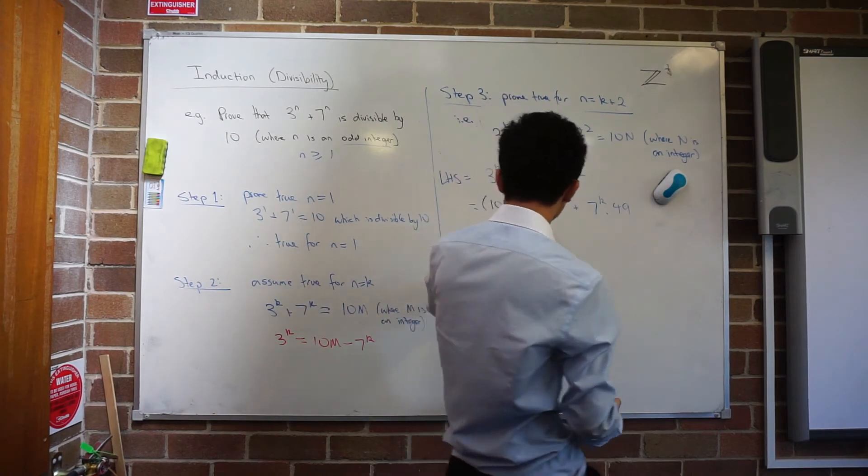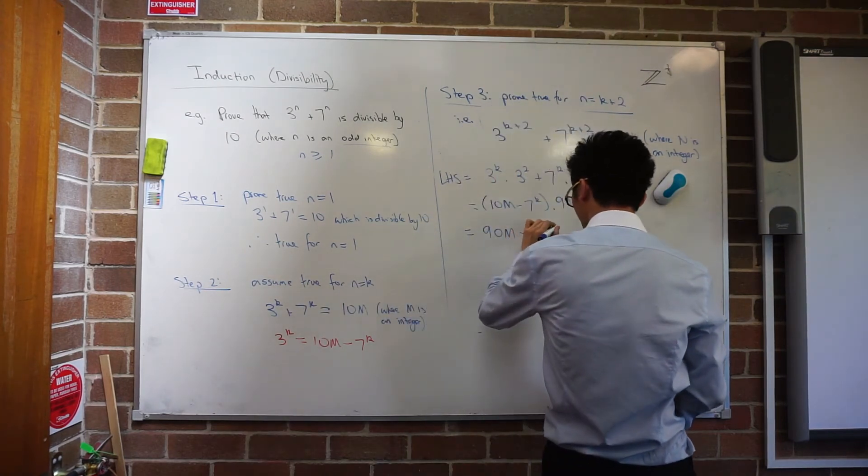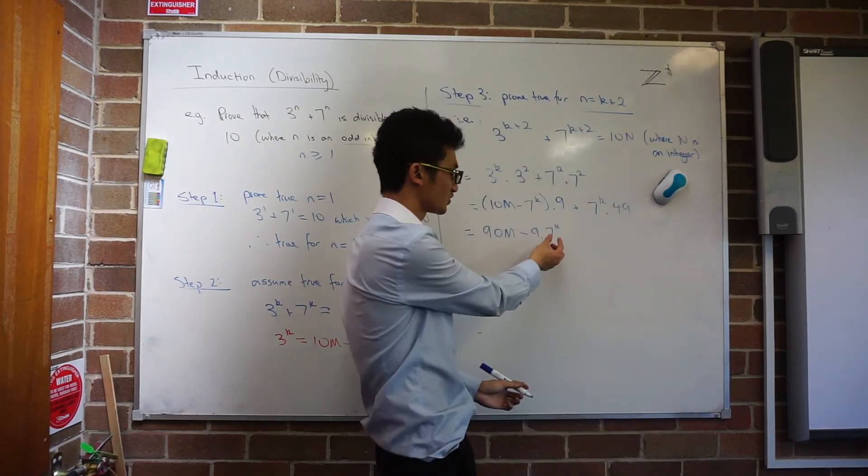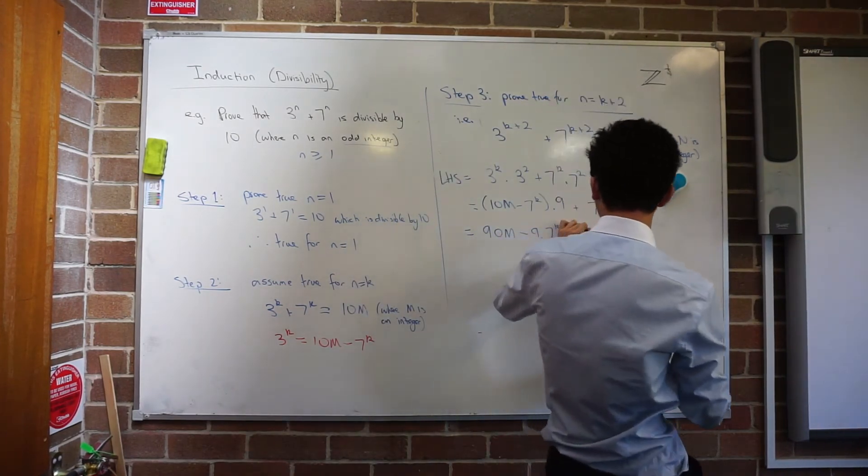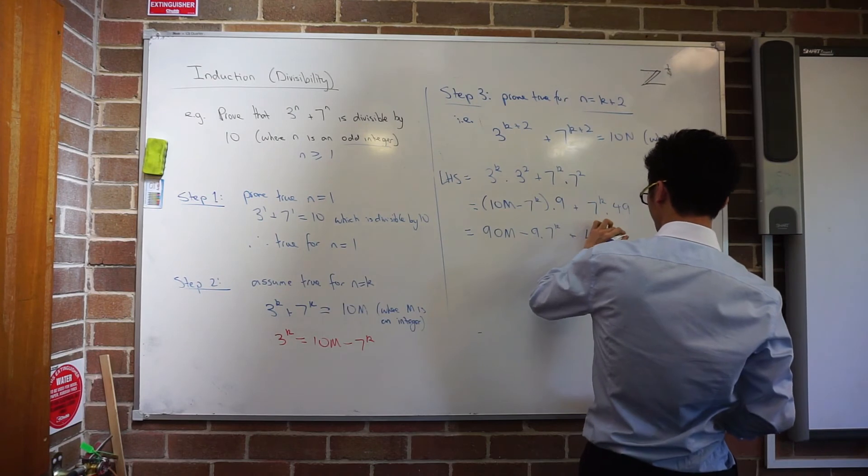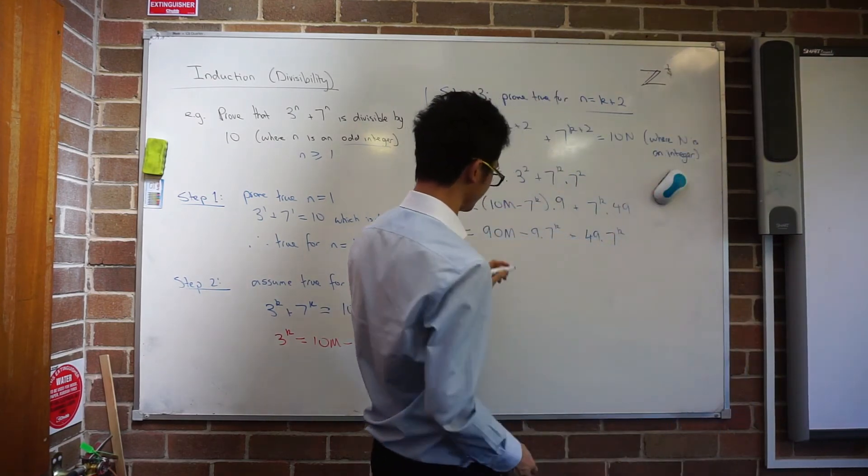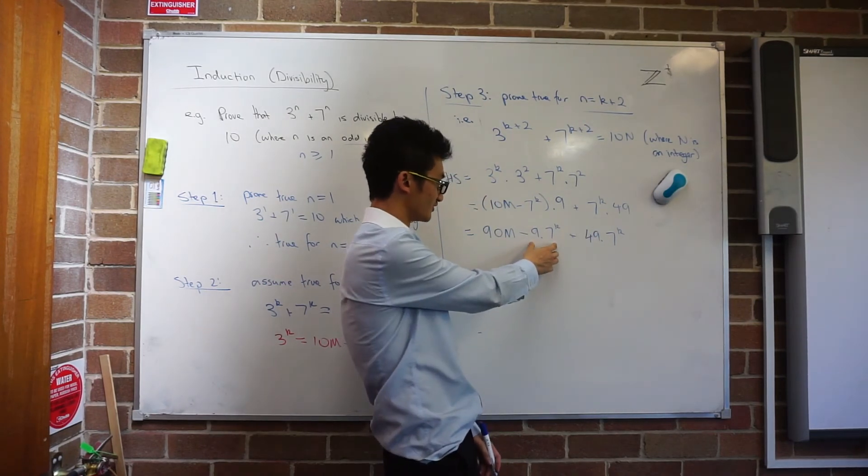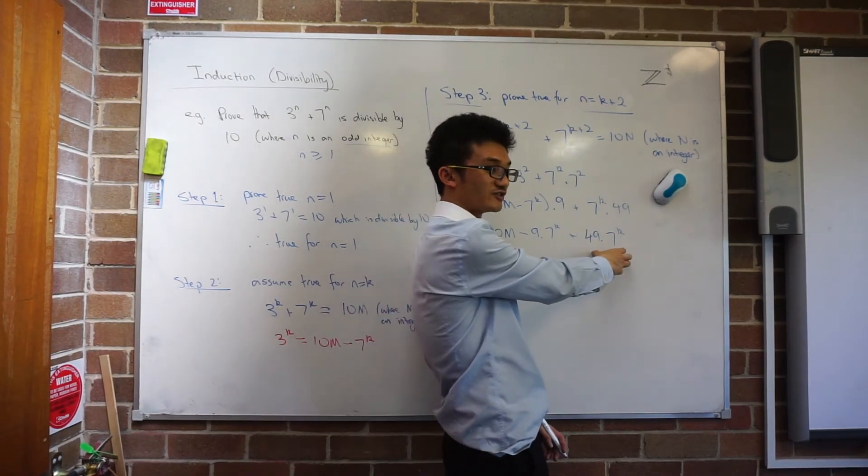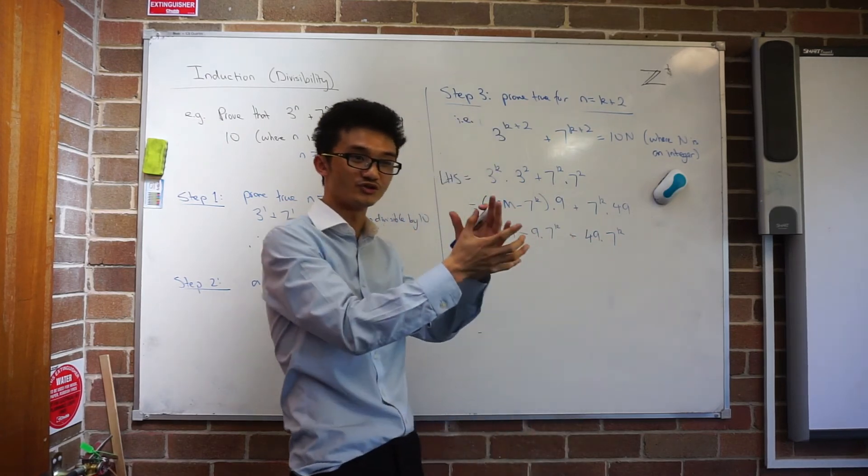So I would write that as negative 9 times 7 to the power k. So I'm just trying to treat it like a variable almost. And then over here, I would have 49 lots of 7 to the power k. I'm just going to rewrite it that way so it's a bit easier to see. And because I'm always treating these like variables, if I have negative 9 lots of 7 to the power k and 49 lots of 7 to the power k, I can put those two together.